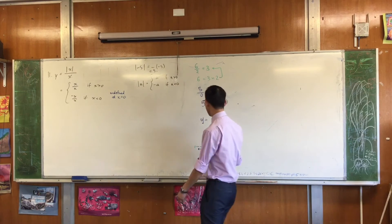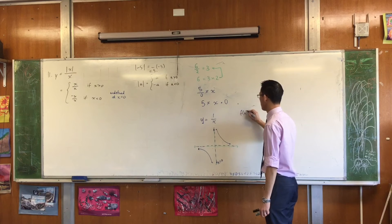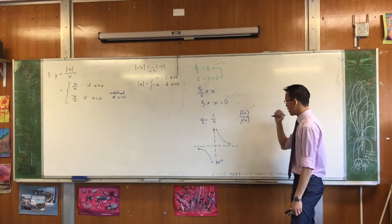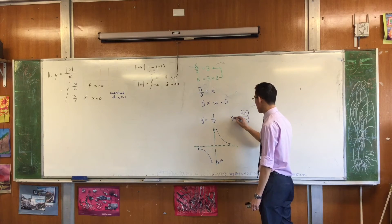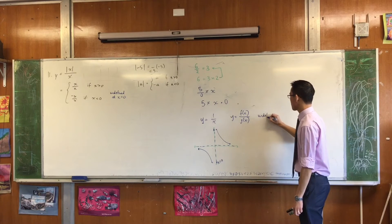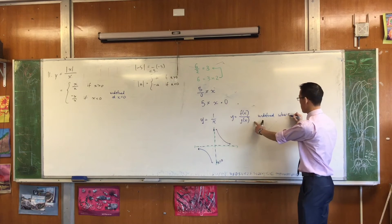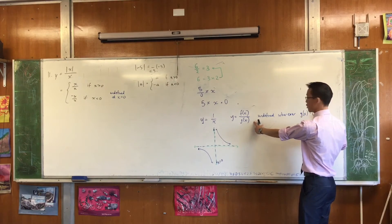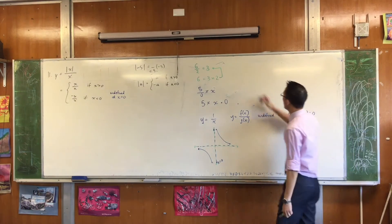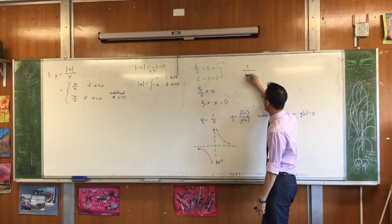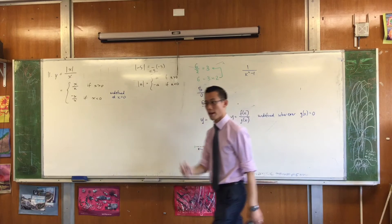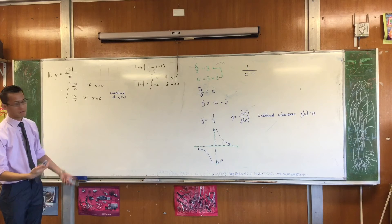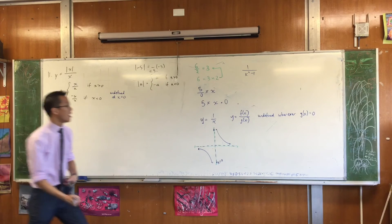Generally speaking, if you've got any function divided by any other function, y equals that whole thing will be undefined wherever the bottom function is zero. So for example, one over x squared minus one — that's going to be undefined at two places, because the denominator is zero at two places, namely plus and minus one.